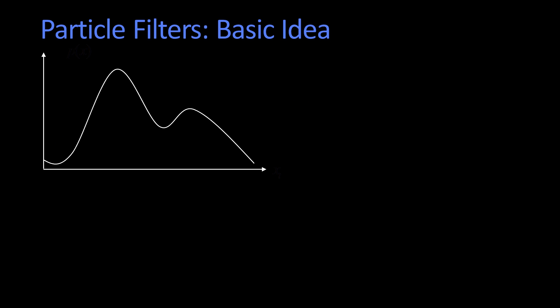All right, so the key to particle filtering is the following. If we have a distribution, and here we have a nice little distribution, which you see, I don't know what that distribution is, but I know one thing, it's not Gaussian.